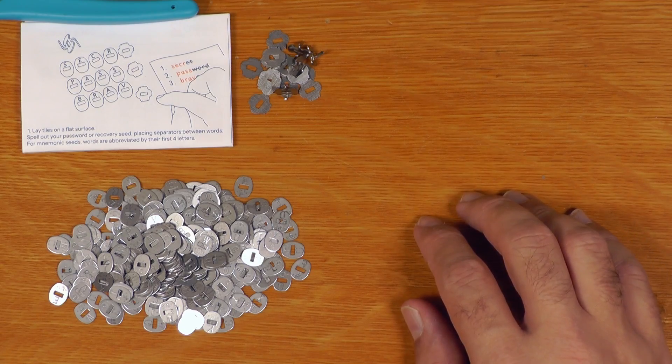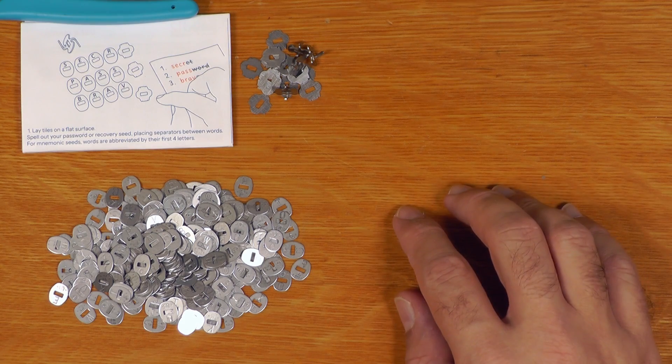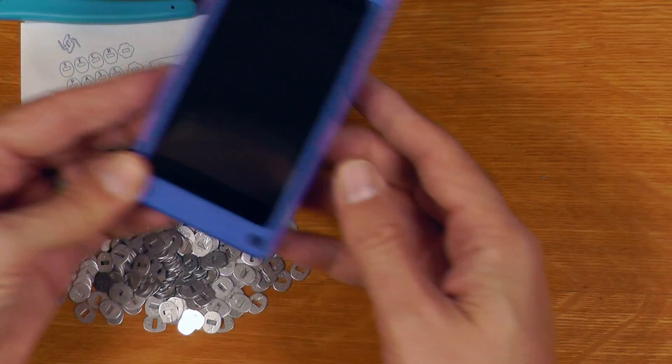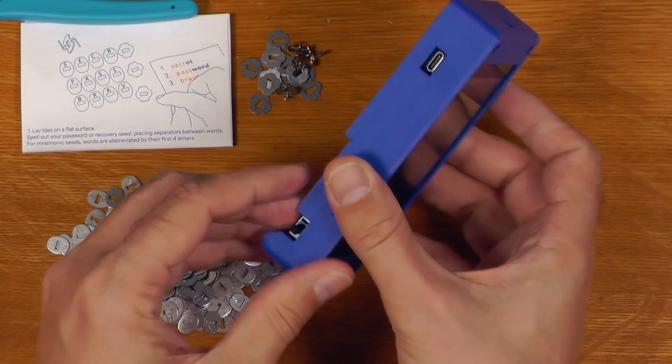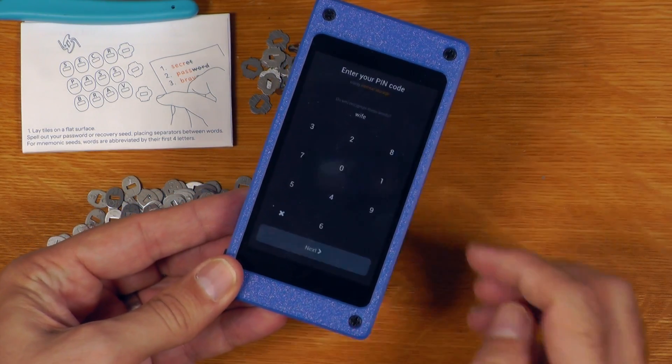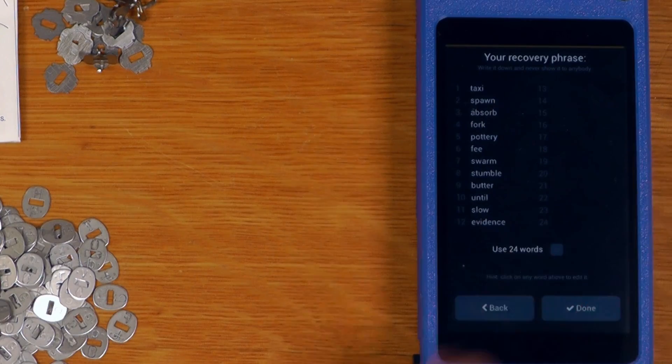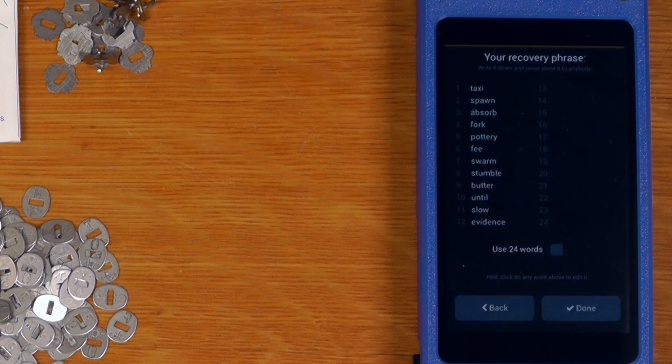All right, so the next thing we need is our 12-word recovery seed. Normally, you would already have this written down on paper somewhere. I'll just generate one using this Spectre Shield Lite that I'm working on. Any wallet will do, but I just happen to have this one on hand. Okay, so that is the 12-word seed I'll be using for this demo.